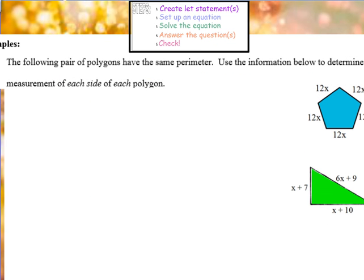Example 1: The following pair of polygons have the same perimeter. Use the information below to determine the measurement of each side of each polygon. So we have to find every side in our polygons over here. It seems like we weren't given that much information, but we're going to follow our steps from above and see what we can come up with.